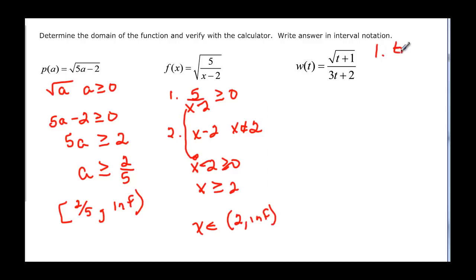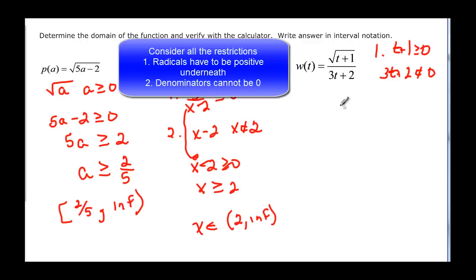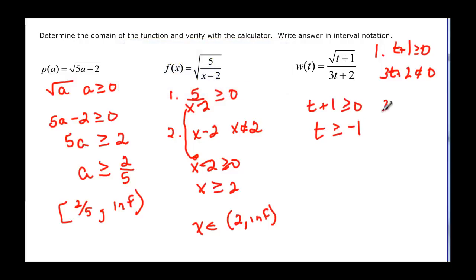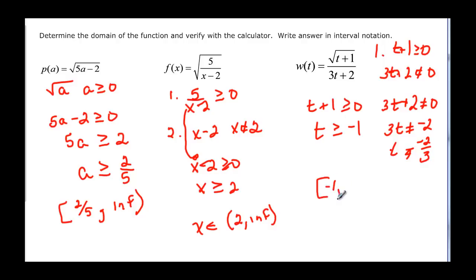We have t plus one that's got to be greater than or equal to zero, and we know that three t plus two cannot equal zero — those are the two things to take into consideration. So if t plus one is greater than or equal to zero, then t has got to be greater than or equal to negative one. Now three t plus two cannot equal zero, so three t can't equal negative two, and t can't equal negative two-thirds. Negative two-thirds is bigger than negative one — it's closer to zero, farther to the right — so it starts at negative one and goes up to negative two-thirds, but can't include it. Then we can have anything on the other side of it, so the domain is bracket negative one to negative two-thirds parenthesis, union parenthesis negative two-thirds to infinity.